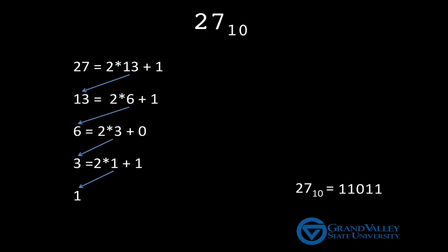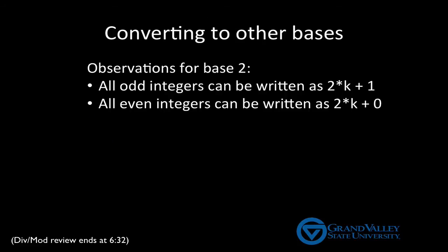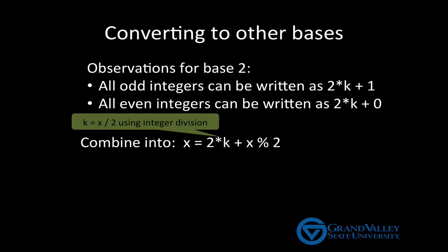This technique for converting decimal to binary generalizes to other number bases. Let's begin with the observations for base 2. We can combine these two observations into a single statement. An integer x can be written as 2 times k plus x mod 2 for some integer k. By that I mean, if you tell me the x, I can find the k. Specifically, the k is what you get when you divide x by 2 using integer division.